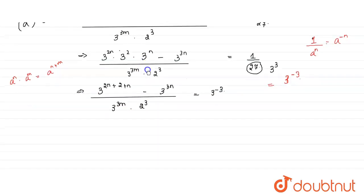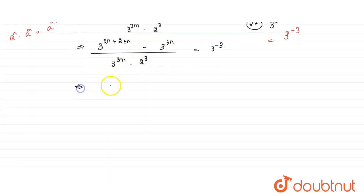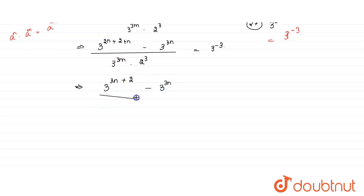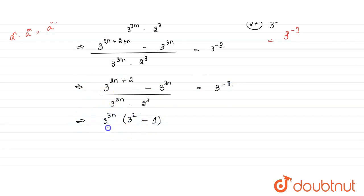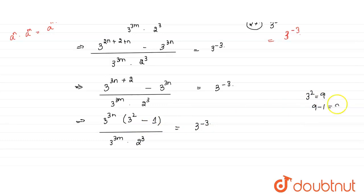Simplifying, 2n plus n gives 3n, so the numerator becomes 3 to the power 3n plus 2 minus 3 to the power 3n. Taking 3 to the power 3n as common, we are left with 3 squared minus 1, which is 9 minus 1 equals 8. Since 2 cubed is also 8, these two terms cancel each other out.